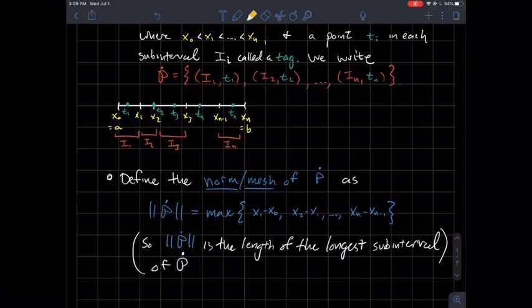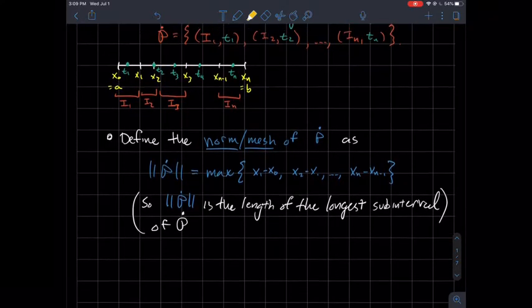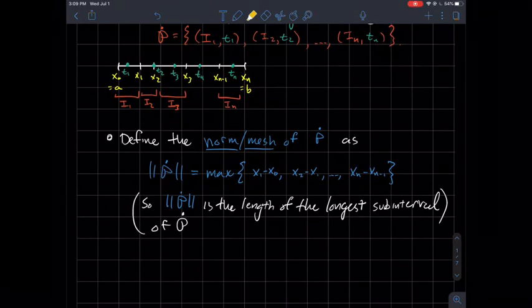Another way to think about it is the length of the longest subinterval in your partition. So if I'm just kind of eyeballing my picture above, to me, it looks like this interval here is the longest subinterval. Therefore, whatever that length is would be the norm. We'll do a concrete example in a minute too, but just theoretically, it's the length of the longest subinterval.